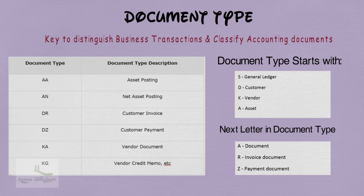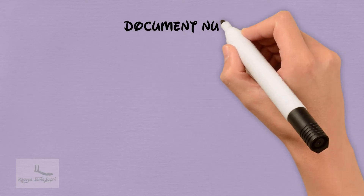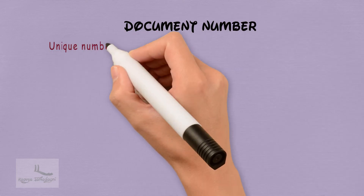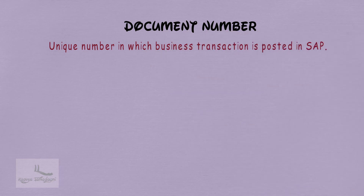The next concept under the Document Principle is the Document Number. The document number is the unique number under which the business transaction is posted in SAP. Let me give you an example to illustrate the importance of document numbers being unique.